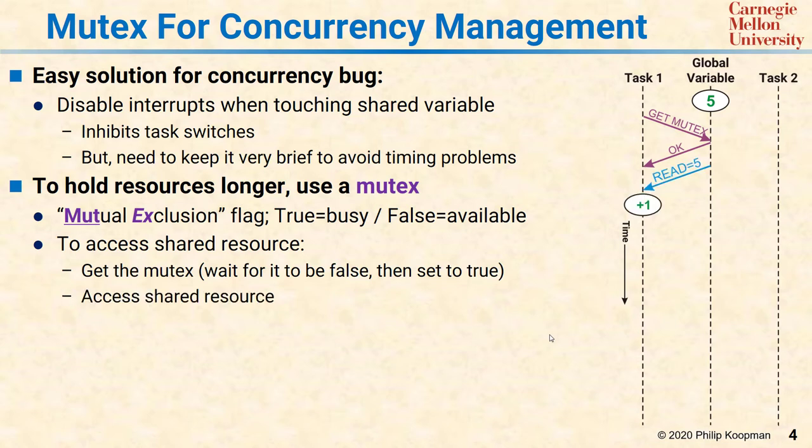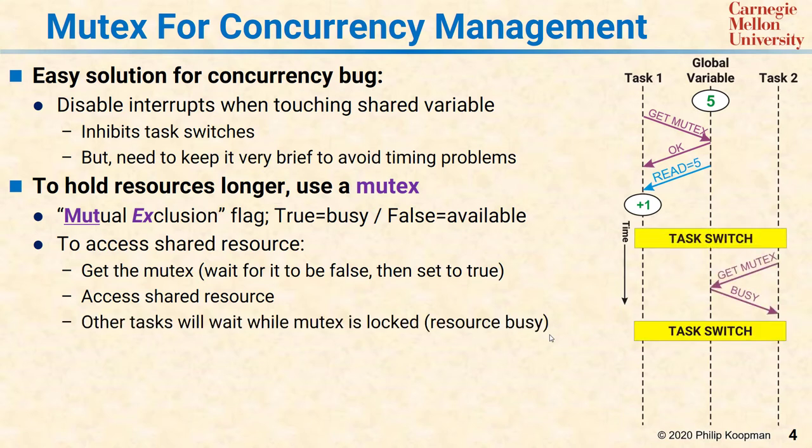When a task switch occurs, task 2 goes out and says it wants to access the variable, and tries to get the mutex. But because task 1 has set the mutex to busy, task 2 sees it's busy, relinquishes control, and the task switches back to task 1. Task 1 completes the write, putting in the correct value of 6.